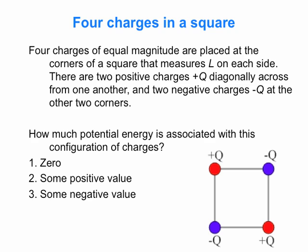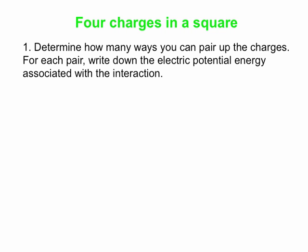The first approach: count the pairs of interacting charges. With four charges, there are six ways to pair them — one with two, one with three, one with four, two with three, two with four, three with four. That gives six pairs of interacting charges.